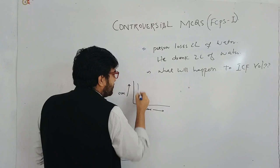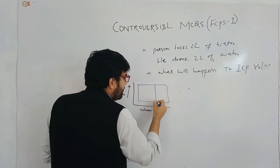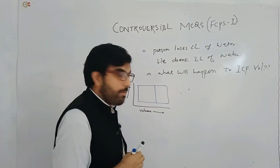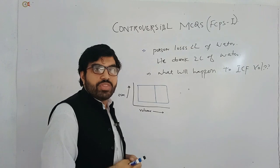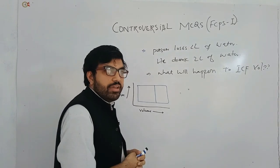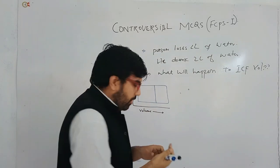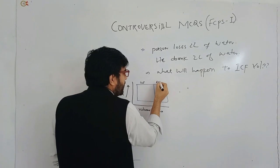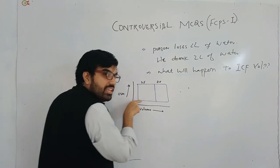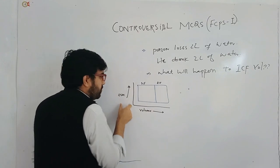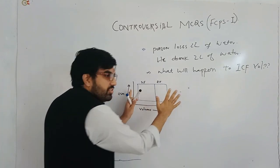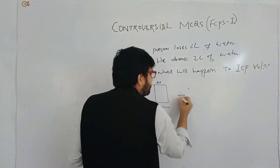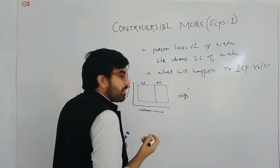In this graph, volume is on the X-axis and osmolality is on the Y-axis. This is the normal fluid compartment diagram. There is a file uploaded in the group regarding this photographic representation — you can study that. Right now the purpose is to explain the diagram. This is the intracellular fluid compartment and this is the extracellular fluid compartment.